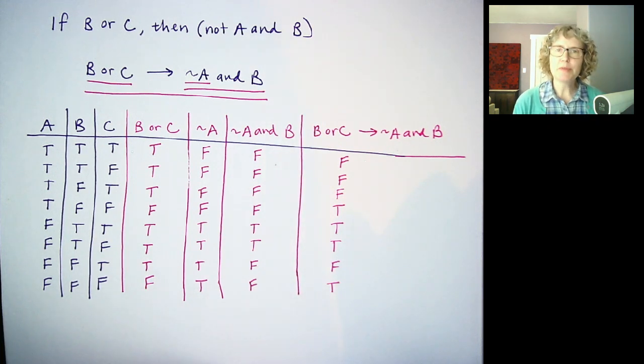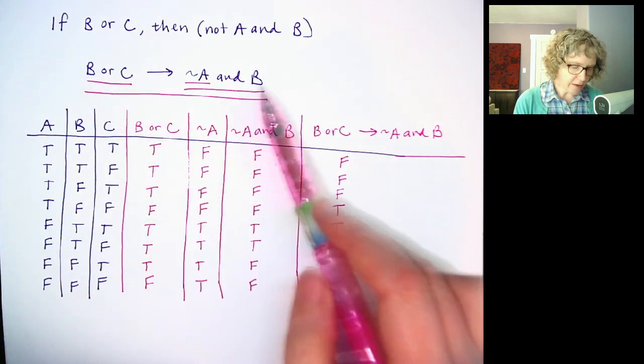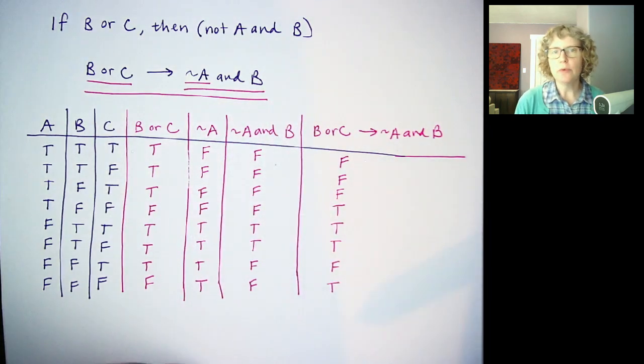Okay, so I hope that helps break down one of these more complicated examples for you. Even if you see just this in My Open Math, write out the whole table and write out all the intermediate steps. That way you can focus on one single operation at a time. Okay, let me know if you have any questions.